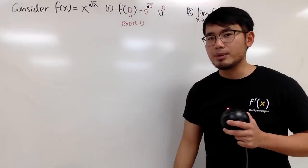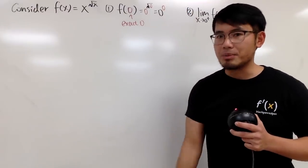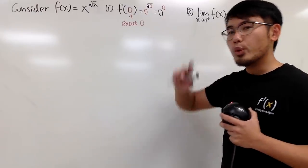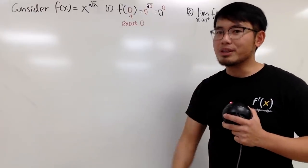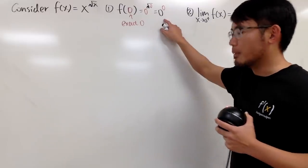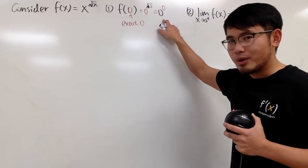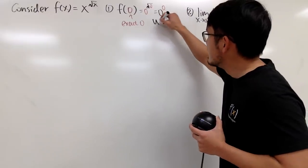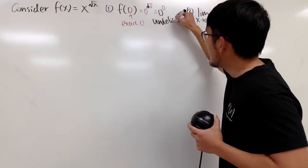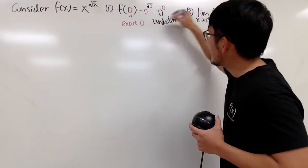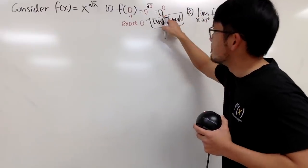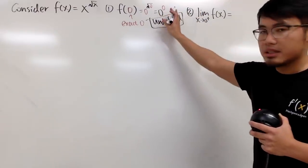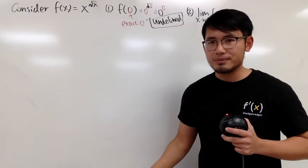Here is the typical problem that people have, especially in calculus. We are not doing calculus at all here — this is just a computational question. 0 to the 0, and unfortunately this right here is undefined, meaning we do not have an answer for 0 to the 0 power. That's it. Done deal.